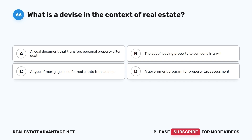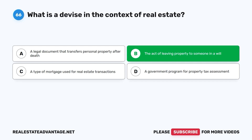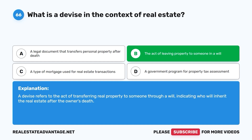Question 66: What is a devise in the context of real estate? A. A legal document that transfers personal property after death. B. The act of leaving property to someone in a will. C. A type of mortgage used for real estate transactions. D. A government program for property tax assessment. The correct answer is B. A devise refers to the act of transferring real property to someone through a will, indicating who will inherit the real estate after the owner's death.